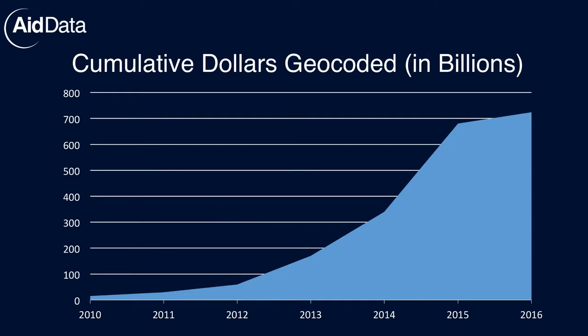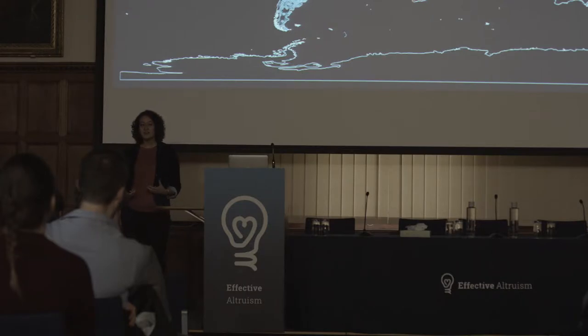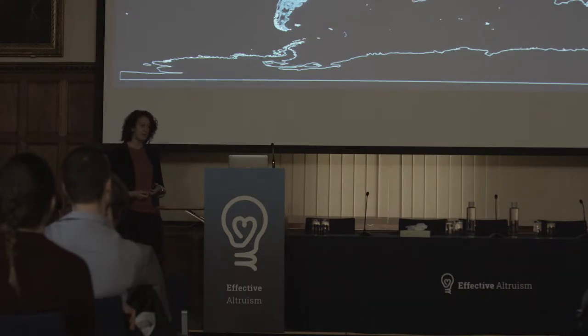To date, AidData has geocoded 128,000 different development aid projects, representing 724 billion dollars of development finance tracked. Working with partners like the USAID Global Development Lab and the US Department of Defense Minerva Initiative, we're on track to geocode the universe of aid in 17 countries and release that data to the public for free — a critical step forward in the transparency and precision of information on how foreign aid money is being spent.